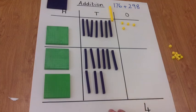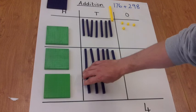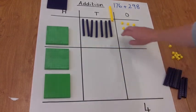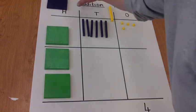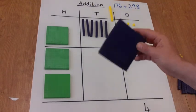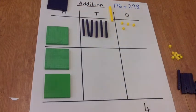Which is too big to go in the tens column. So we have to regroup 10 of the tens to make 100, which then goes in the hundreds column.